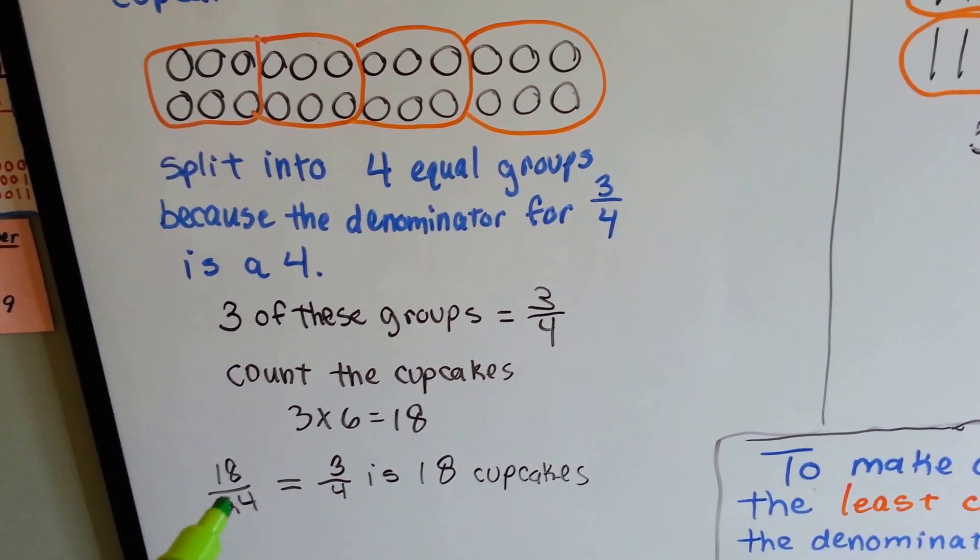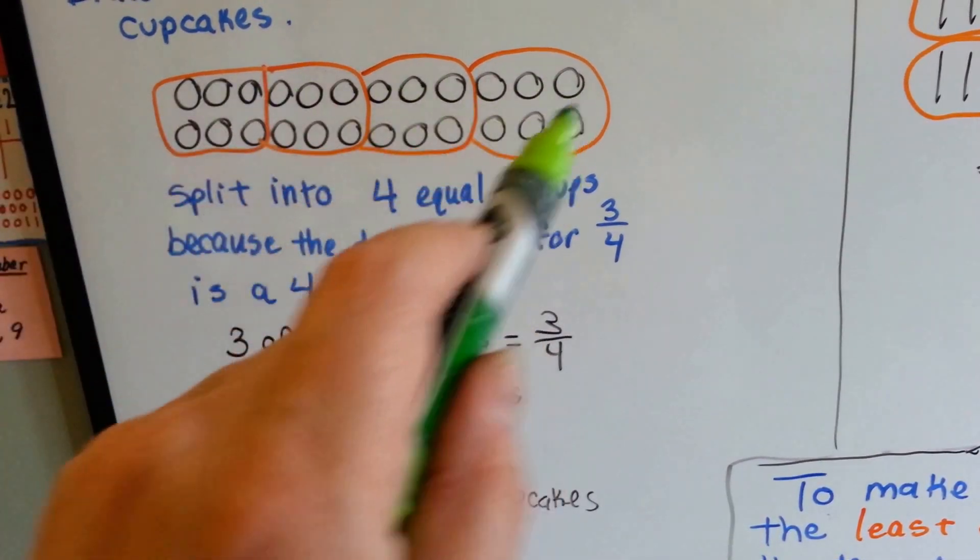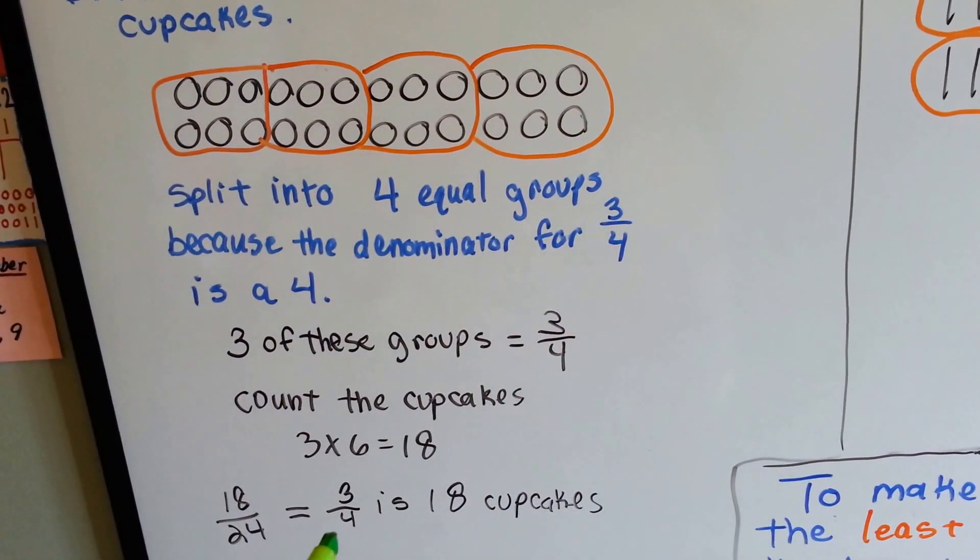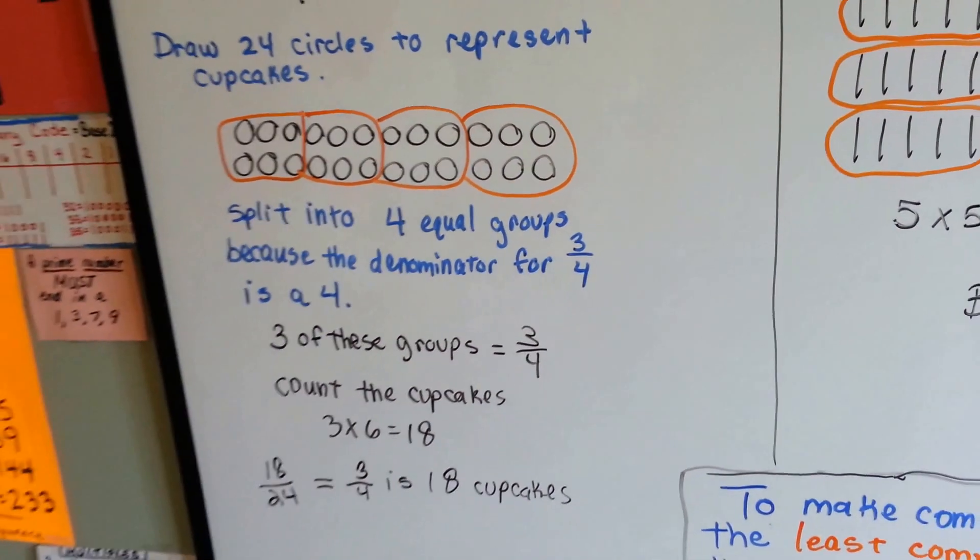18 twenty-fourths is equal to three-fourths. 18 out of 24 is equal to three-fourths. So 18 cupcakes are chocolate.